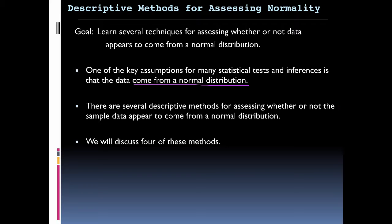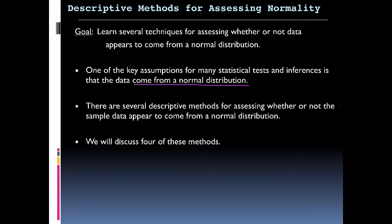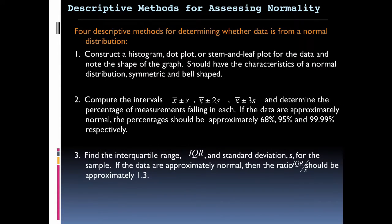The first one is constructing a histogram, a dot plot, and stem-and-leaf plot for data, and note the shape of the graph. There should be some characteristic of a normal distribution or a symmetric bell shape, so we're looking for something that looks something like that.